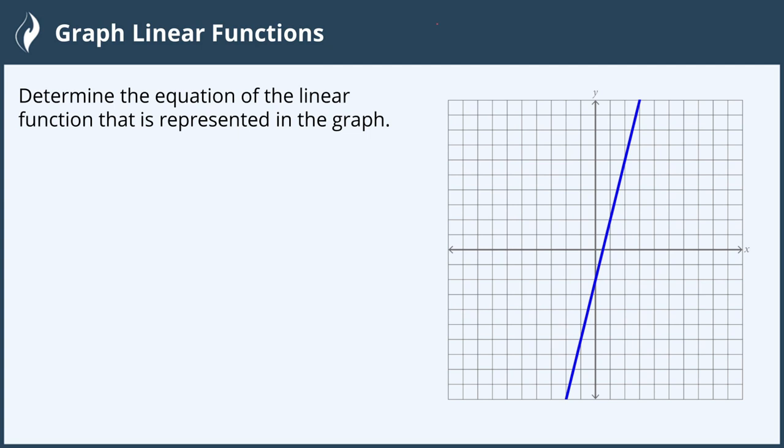A linear function is typically written with the slope intercept form, which is f of x equals mx plus b. The m represents the slope, or the rate of change, and b represents the y-intercept, or where the graph crosses the y-axis. So we're going to look for those two items, the y-intercept and the slope, or m. And slope is written as rise over run.